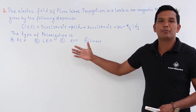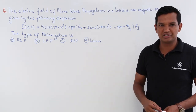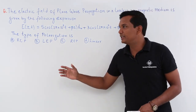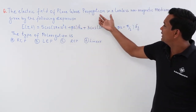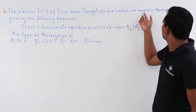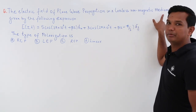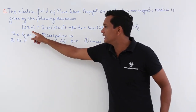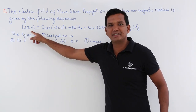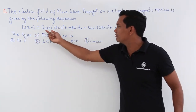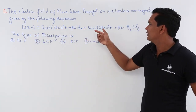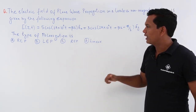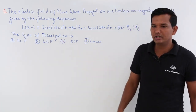In this class, we will try to solve a problem on polarization. Let us see what is given in the problem. It is given that an electric field of a plane wave propagating in a lossless non-magnetic medium is given by this expression. This is nothing but the electric field in space and time, which is 5 cos Ax cap and 3 cos Ay cap, and we have to conclude about the polarization.